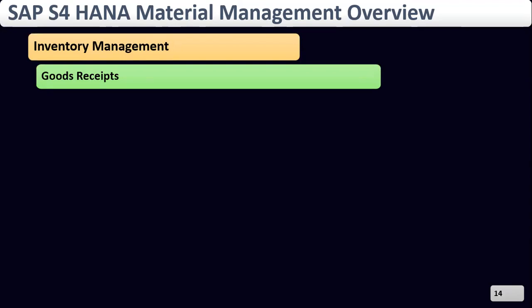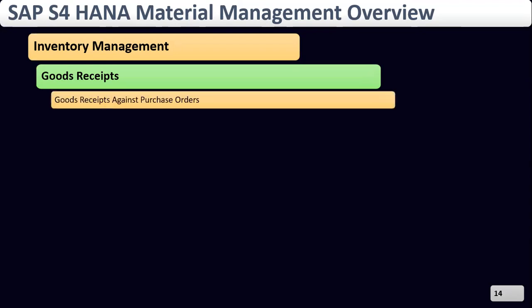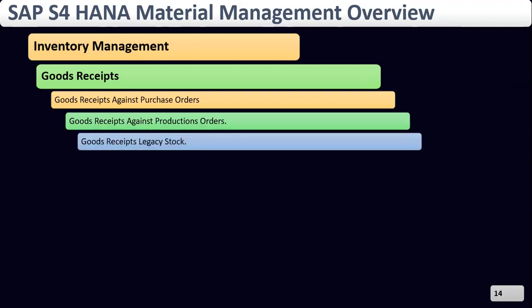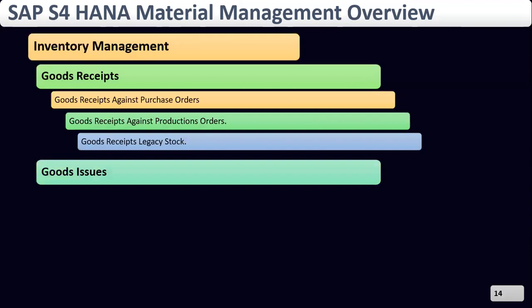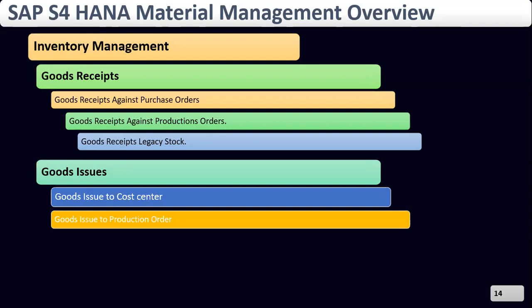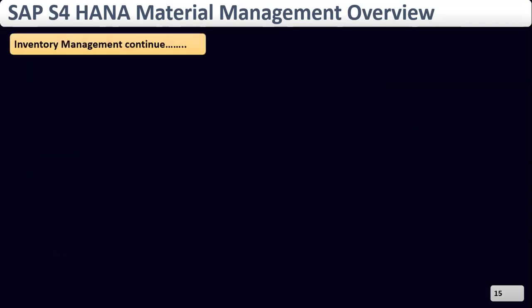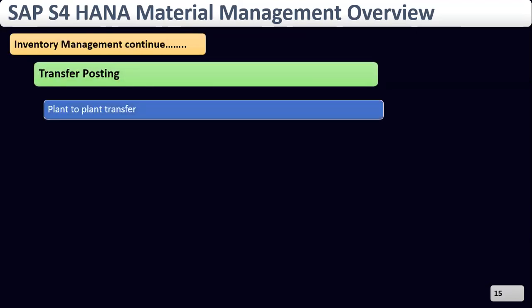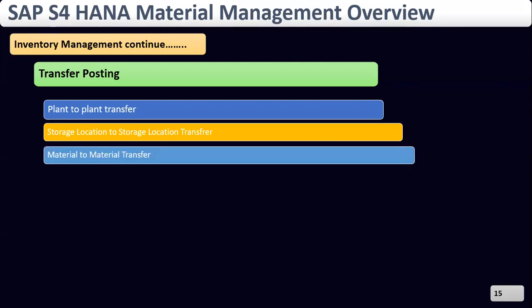Now we are going to discuss inventory management. Inventory management means managing the stock of material. There are three types: goods receipt, goods issue, and transfer posting. For goods receipt, we can create it with reference to a purchase order, with reference to a production order, or for legacy stocks. For goods issue, it can be with respect to a production order, a cost center, or a sales order. For transfer posting, we can transfer plant to plant, storage location to storage location, or material to material.